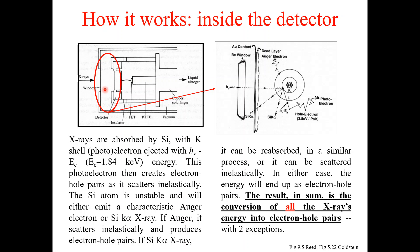Inside the detector, when x-rays interact with the detector, the x-rays are absorbed by the silicon crystals. This portion has been enlarged and shown separately. An x-ray of particular energy comes through the window and interacts with the silicon crystals — specifically with the inner shells — and an electron is ejected with a corresponding amount of energy. This ejected electron is called the photoelectron, and the photoelectron then creates electron-hole pairs as it scatters inelastically in the material.